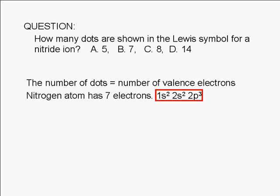A nitrogen atom has seven electrons, and its electron configuration is 1s² 2s² 2p³.